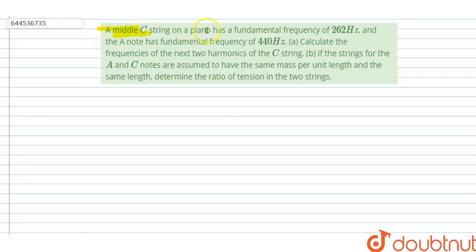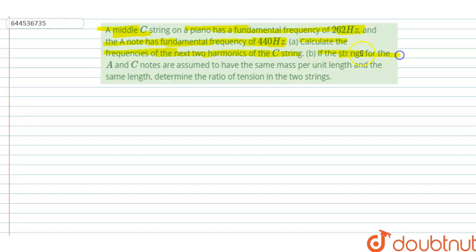In this question, a middle C string on a piano has a fundamental frequency of 262 Hz, and the A note has a fundamental frequency of 440 Hz. In the first part, we have to calculate the frequency for the next two harmonics of the C string. In the second part, if the strings for the E and C notes are assumed to have the same mass per unit length and the same length, we must determine the ratio of tension in the two strings.